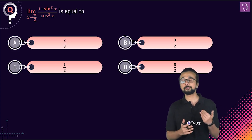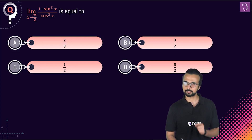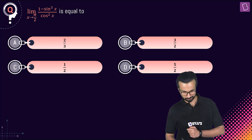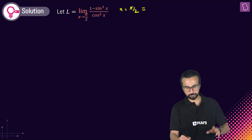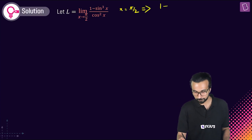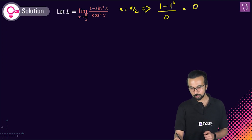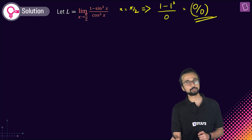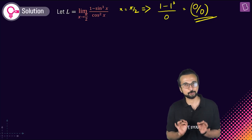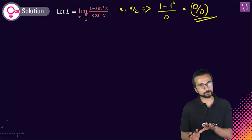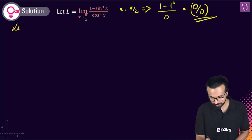Now we need to find limit x tends to π/2 of (1 - sin³x) / cos²x. Substituting x = π/2: numerator gives 1 - 1³ = 0, denominator gives cos(π/2) = 0. So we get zero by zero again — indeterminate form. We need to eliminate it.